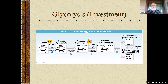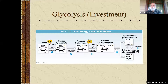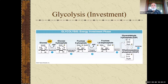So that's what I want you to know. One last time: glycolysis, the investment phase, five steps — you start with glucose, you put in two ATP, and what comes out is two glyceraldehyde-3-phosphates, or two G3Ps. That's pretty simple.